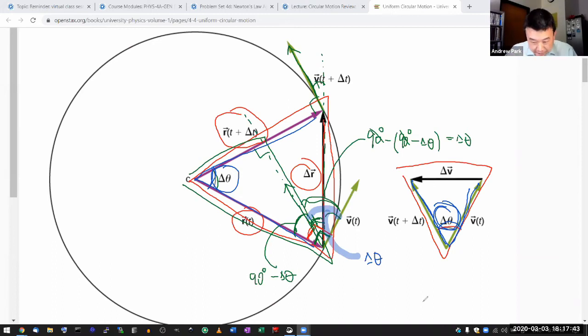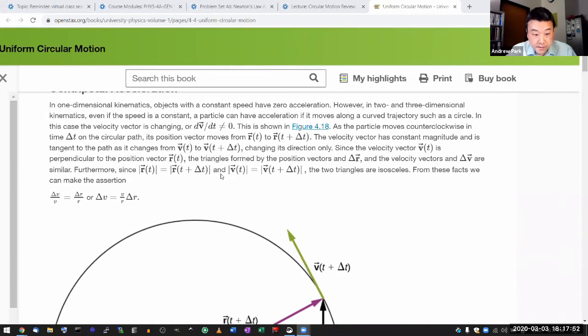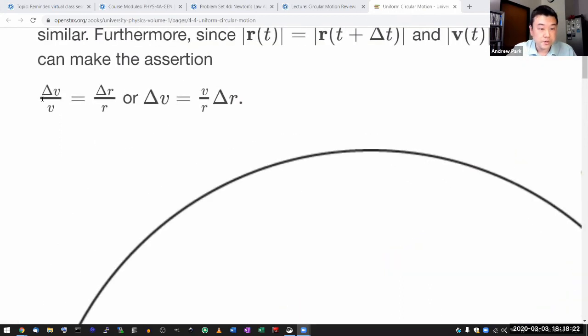Okay, all right, so having filled in that gap, let me continue reading. So these two triangles shown here are similar. And furthermore, from these facts we can make the assertion that delta v over v is equal to delta r over r, with the ratio of the two sides of similar triangles remaining the same.